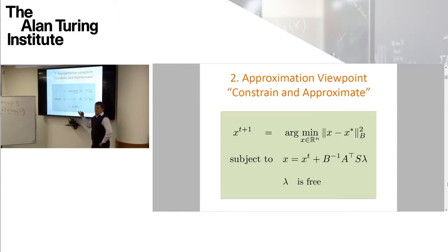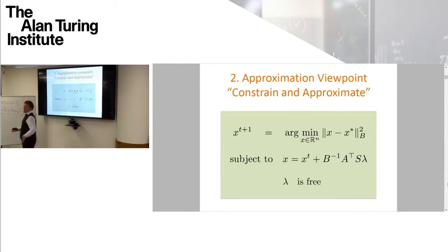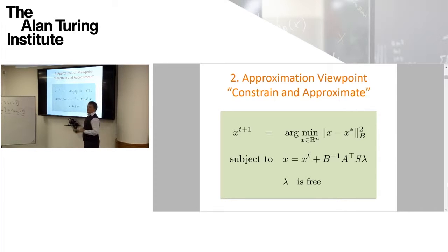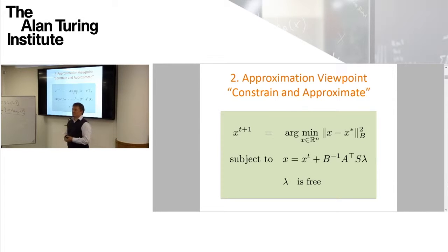In this random subspace, it is very unlikely that the solution will lie. Why would the solution lie in a random subspace passing through x_t? There's no reason. So you want to do as well as possible on the random subspace — find the point there which is as close to the solution of the system (which you do not know) as possible.